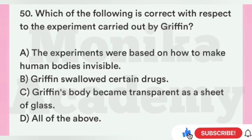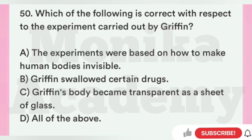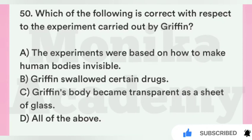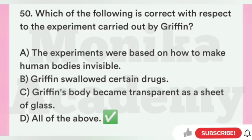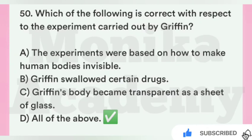Question 50/58: Which of the following is correct with respect to the experiment carried out by Griffin? Option A: The experiments were based on how to make human bodies invisible. Option B: Griffin swallowed certain drugs. Option C: Griffin's body became transparent as a sheet of glass. Option D: All of the above. The correct answer is D, all of the above — Griffin के experiment से जुड़ी तीनों बातें सही हैं.